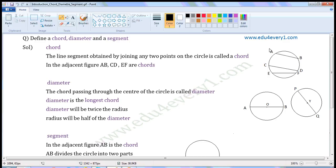In the adjacent figure, A and B are two points on the circle. So, AB is called a chord. Similarly, CD is called a chord and EF is called a chord.